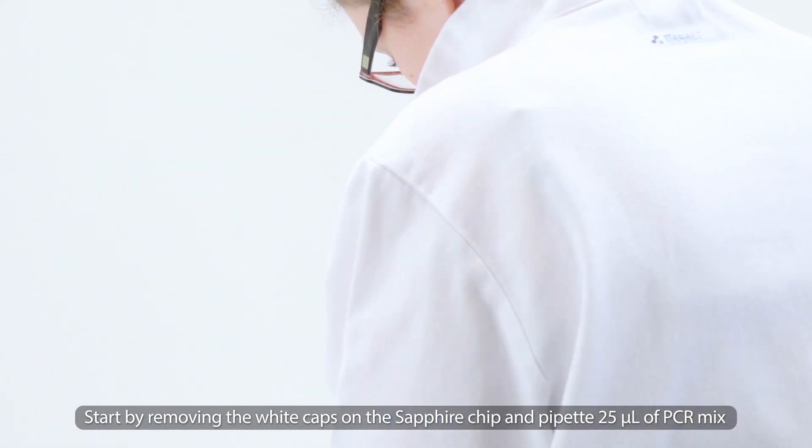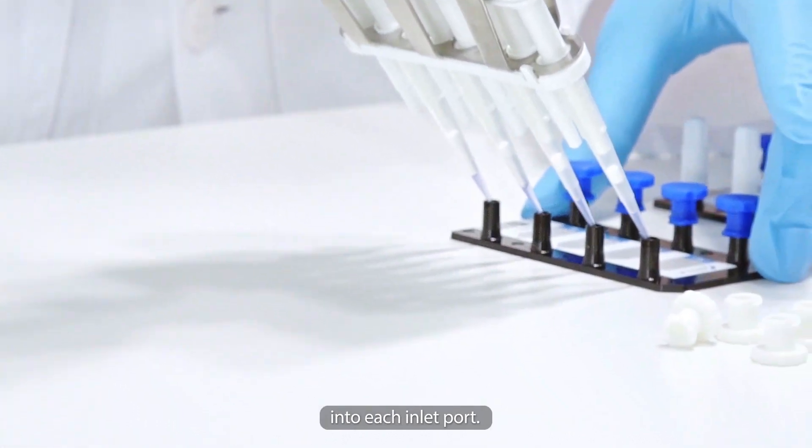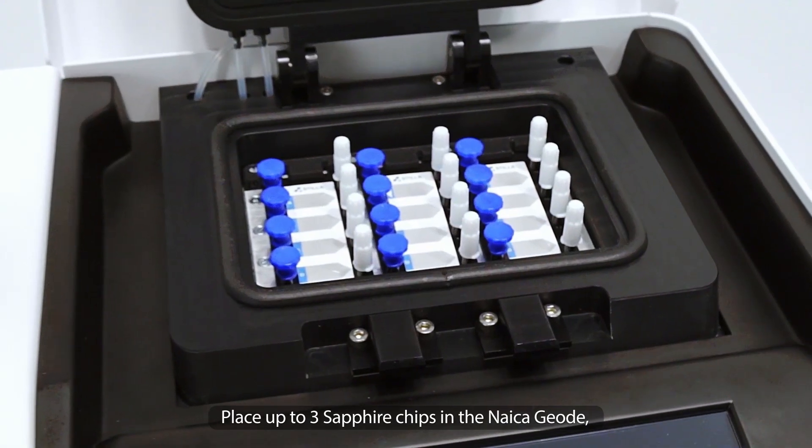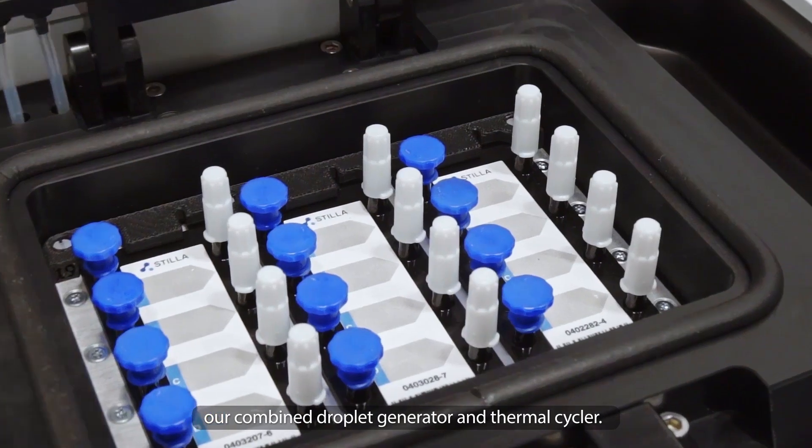Start by removing the white caps on the Sapphire chip and pipette 25 µl of PCR mix into each inlet port. Then simply seal with the PCR caps and place up to three Sapphire chips in the NICA geode, our combined droplet generator and thermal cycler.